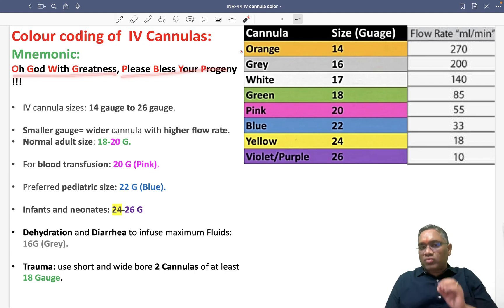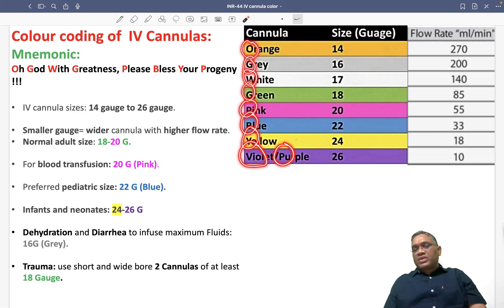The mnemonic is: Oh God With Greatness Please Bless Your Progeny. Oh God With Greatness Please Bless Your Progeny - this is what we can remember.